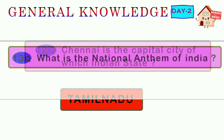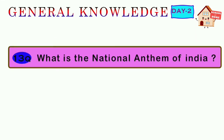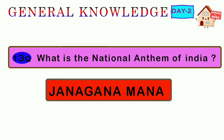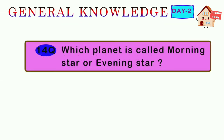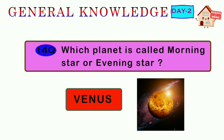Thirteenth question: what is the national anthem of India? Fourteenth question: which planet is called the morning star or evening star? Answer: Venus.